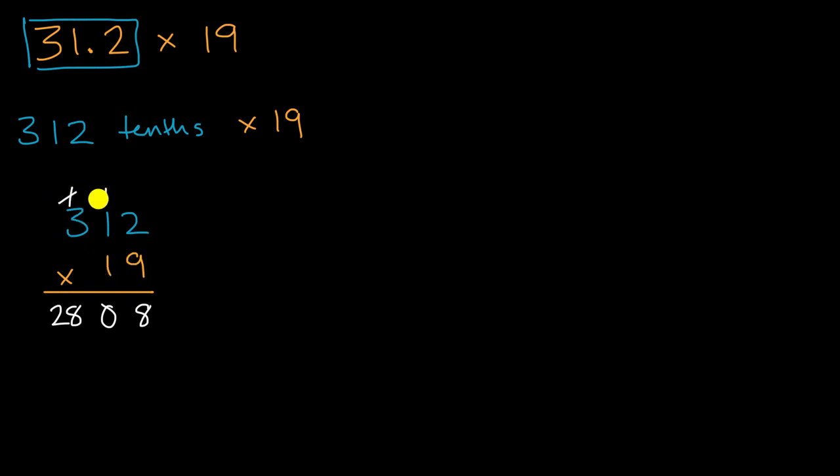And then we go to the tens place right over here. And so we would say one times two is two, one times one is one, one times three is three, and then we add everything together. We get eight, zero plus two is two, eight plus one is nine, two plus three is five. So we get 5,928.